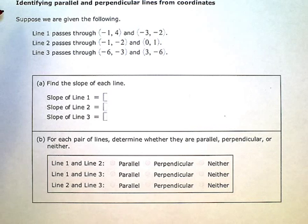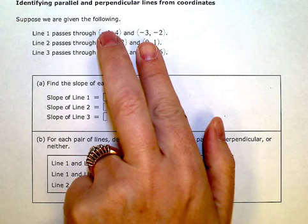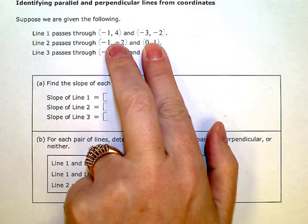Identifying parallel and perpendicular lines from coordinates. Suppose we are given the following. We have three lines here and all we know about those lines is we have a pair of points for each line - two pairs of coordinates.